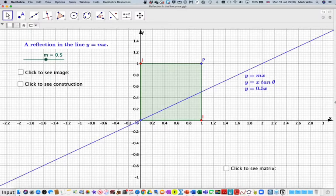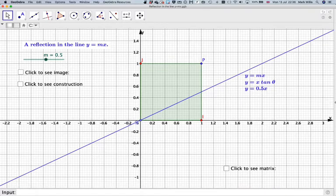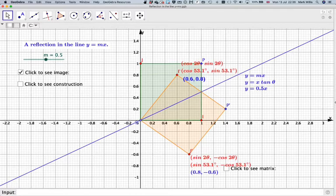So if we reveal the image, this is the image that you get if you reflect the unit square. Now the important points are this one here which is 1, 0 on the original shape and 0, 1 here.